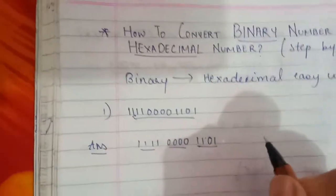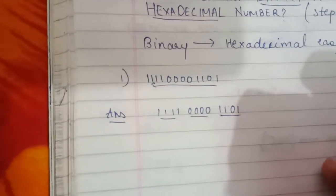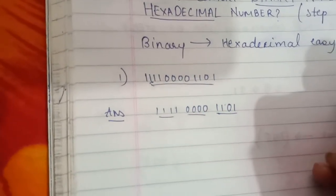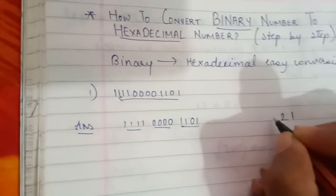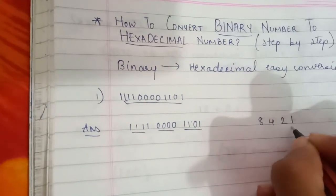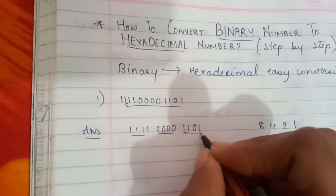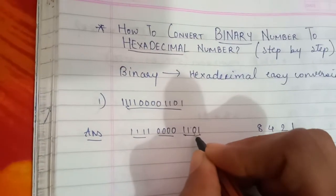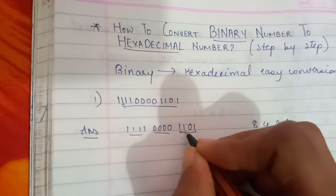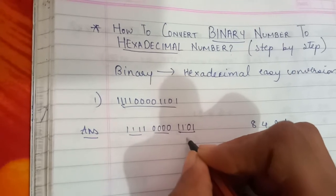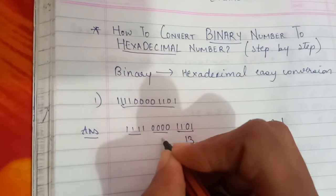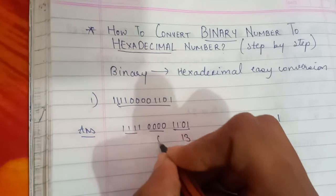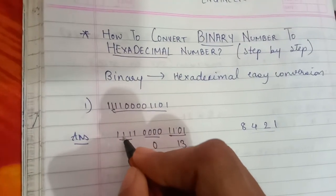Now what we have to do is convert each group. We apply the positional values 1, 2, 4, and 8 to each group. For the first group (1 0 1 1): 1 plus 2 is not counted, so 1 plus 4 is 5, and 5 plus 8 is 13. The second group is all zeros, so its value is 0.